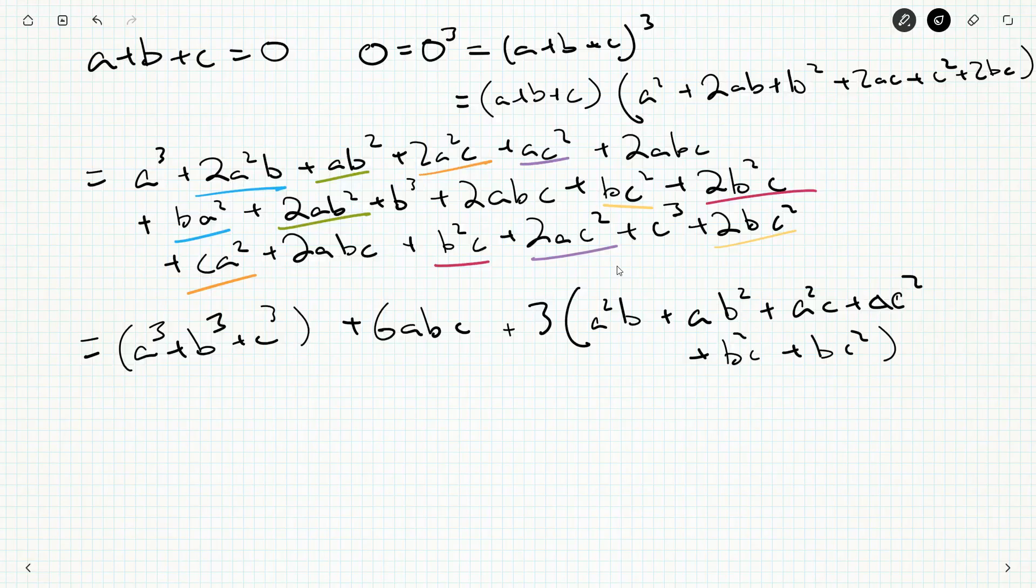So, and then we've got plus 3 times a squared b plus ab squared plus a squared c plus ac squared plus b squared c plus bc squared. So there's 3 of each of them. Alrighty. So, we've got a cubed, b cubed, c cubed over here. Now we want 3abc on the other side. So we've got, first of all, we've got the wrong number of abc's. Second of all, we've got them on the wrong side. So, we need this stuff here to essentially turn out to be 9abc's. That's what we'd like. Negative 9abc's.